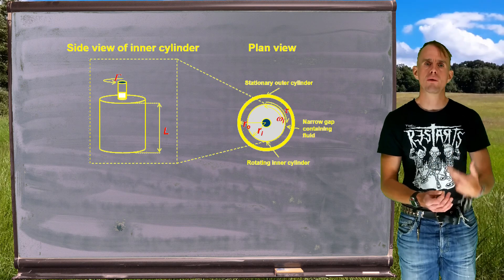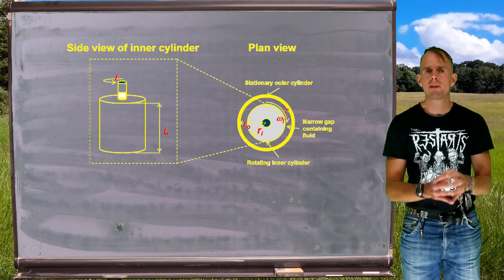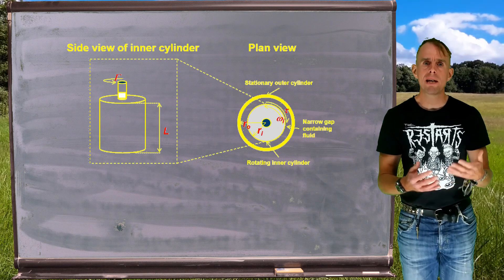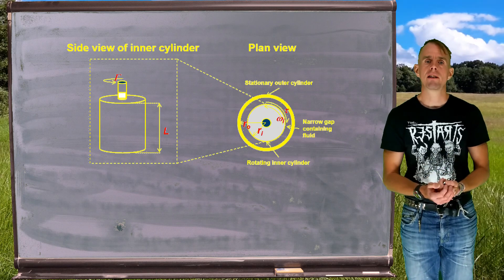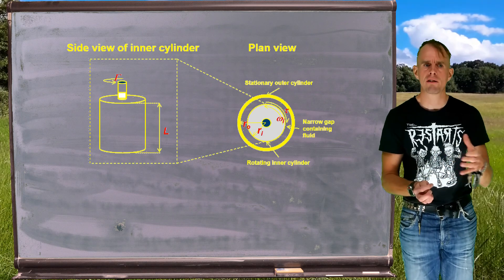If you recall our conversation on Couettes for Newtonian flow, we said that the gap is narrow, because if the gap isn't narrow, we risk generating secondary flows, in this case, Taylor vortices. So again, we're going to assume a nice narrow gap.